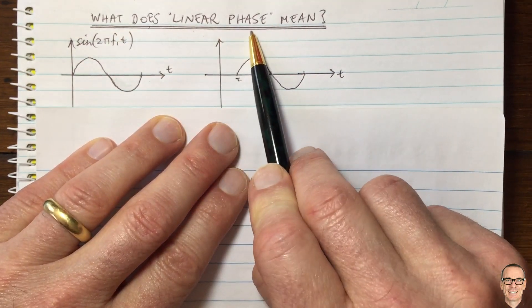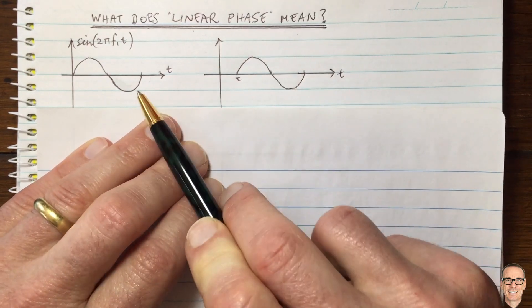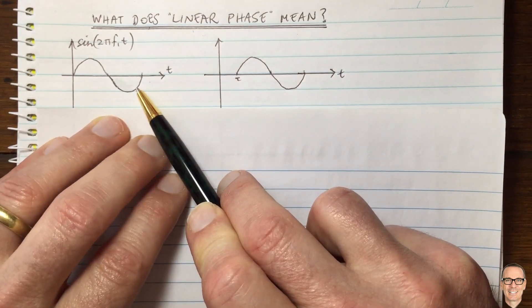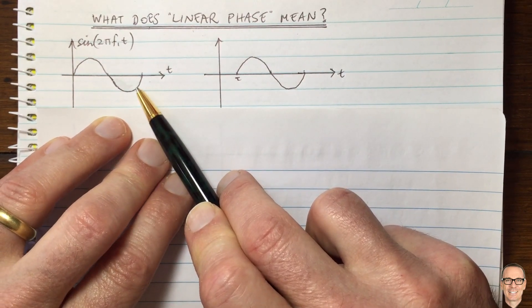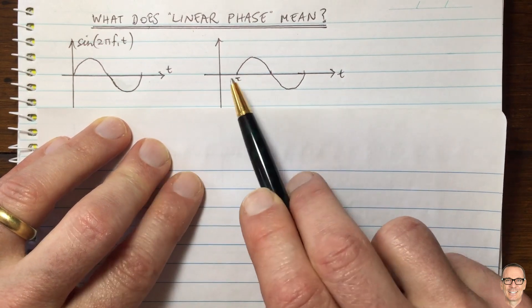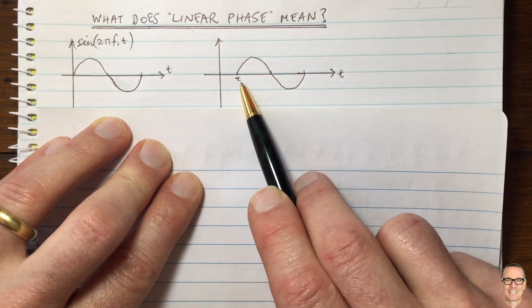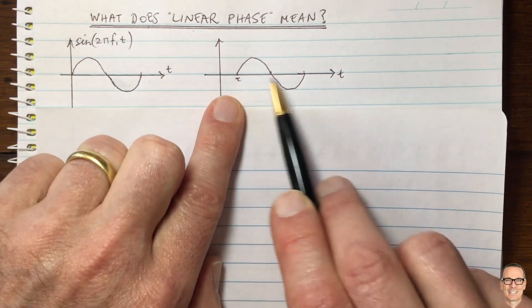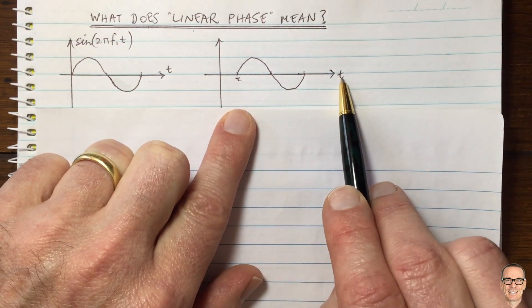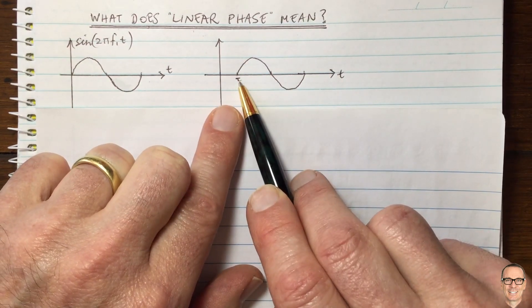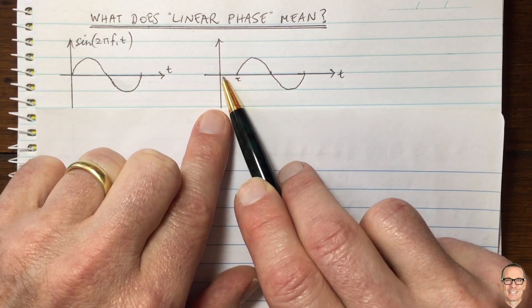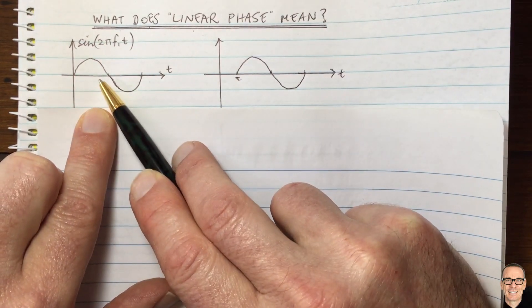So what does linear phase mean? We're going to look at a sinusoid. We're going to consider an example where it's gone into a system and it's come out with a delay. So here we are with the output coming delayed by tau. And on this side, if we take little t and we subtract tau from it, then we would have this signal on this side.